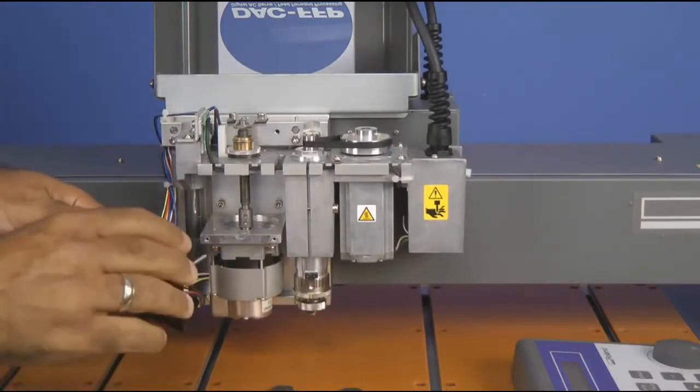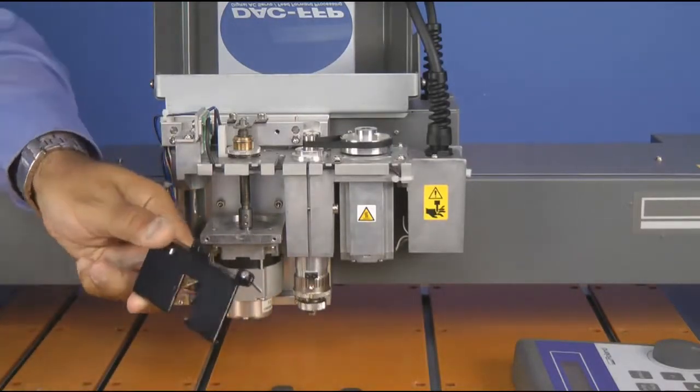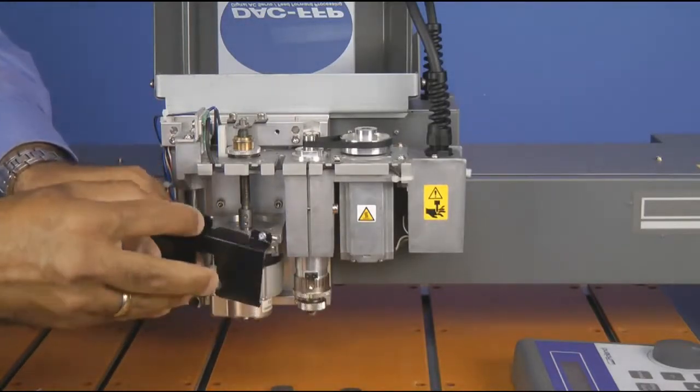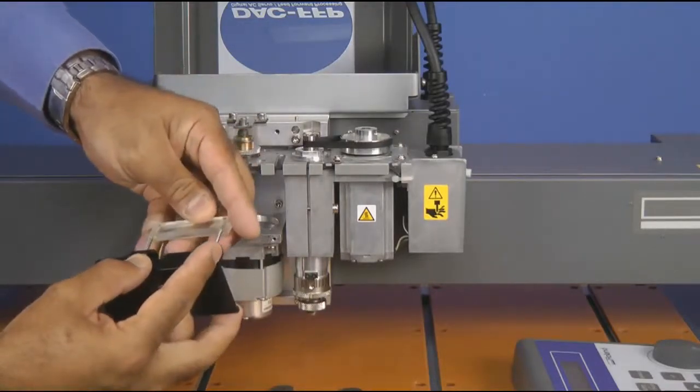Next, we will take the long screws that come with our raster pen license kit. We will place those on the cover plate. We will then take our acrylic spacer and mount that.